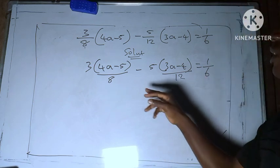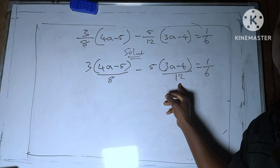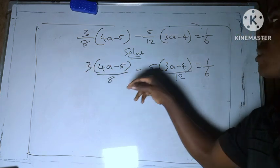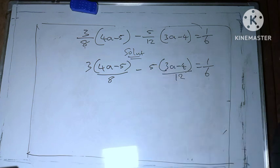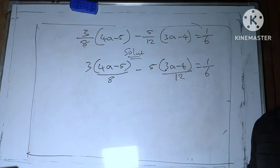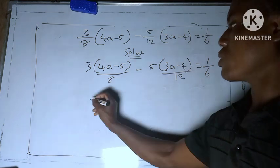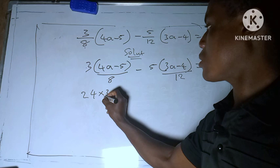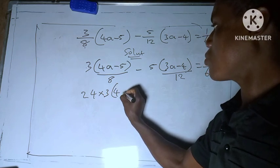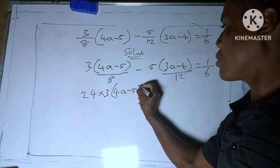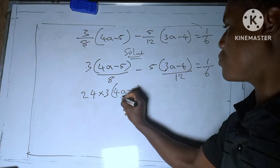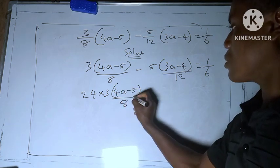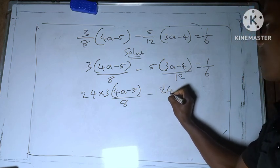Secondly, find the LCM between 8 and 12 and use the LCM to multiply these 3 and 5. The LCM of 8 and 12 is 24, so you see 24 multiply by this 3 bracket 4a minus 5 over 8, minus 24 again.